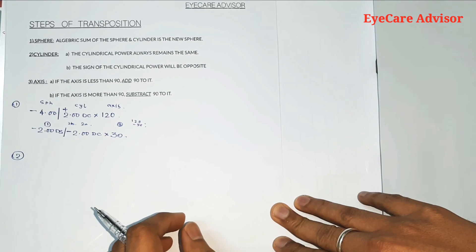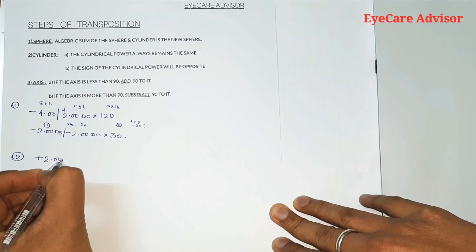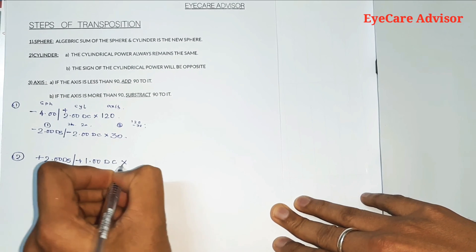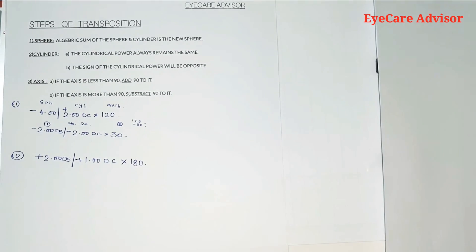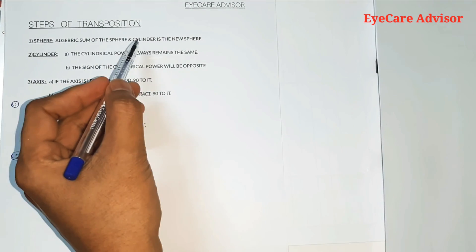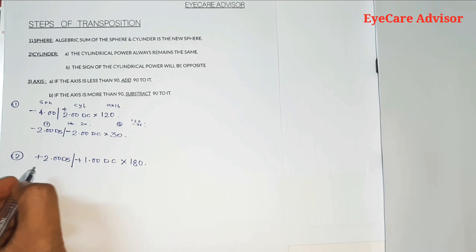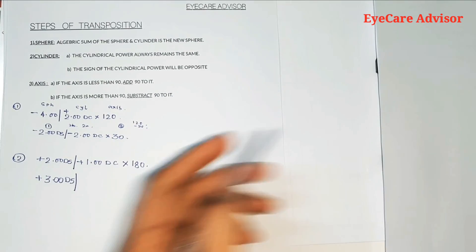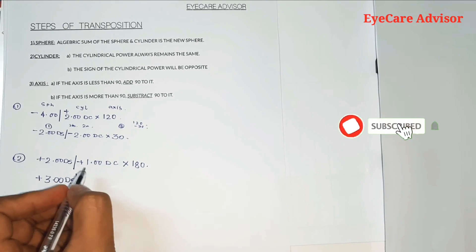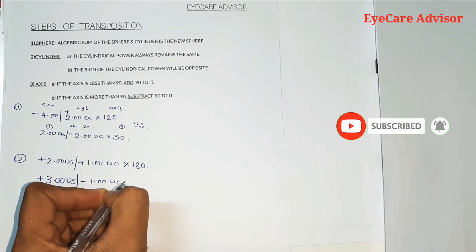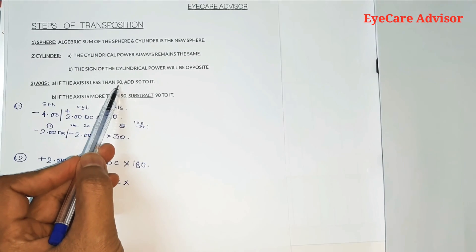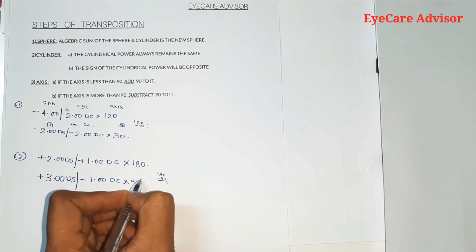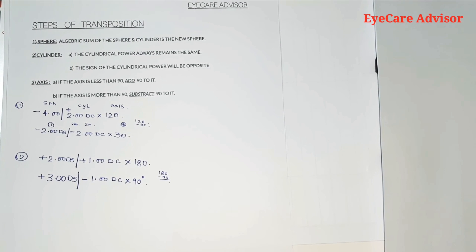Example 2: plus 2 spherical with plus 1 cylindrical, axis 180 degrees. Step one — algebraic sum: plus 2 plus 1 equals plus 3 diopters spherical. Step two — the sign of the cylinder power will be opposite, so plus 1 becomes minus 1; the cylindrical power always remains the same, giving minus 1. Step three — the axis is more than 90, so 180 minus 90 equals 90 degrees. Transposition result: plus 3 spherical, minus 1 cylindrical, axis 90 degrees.